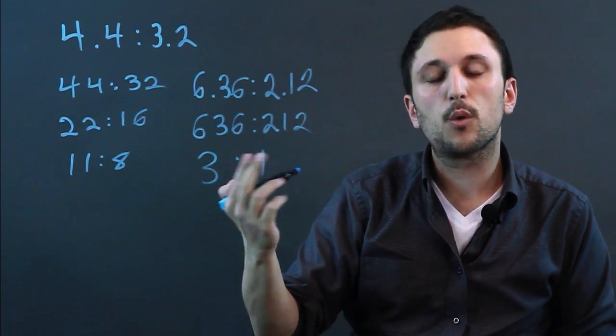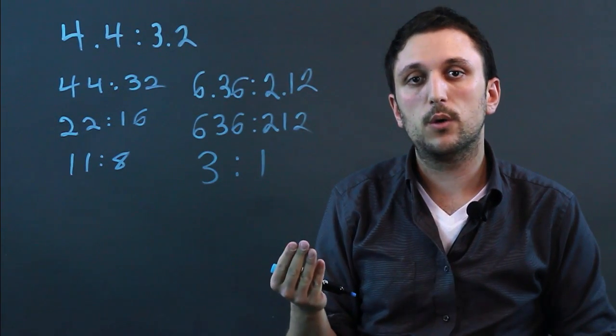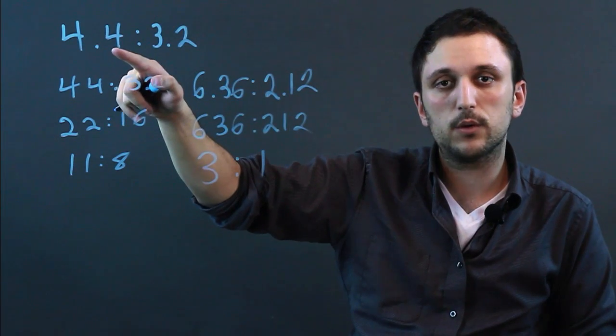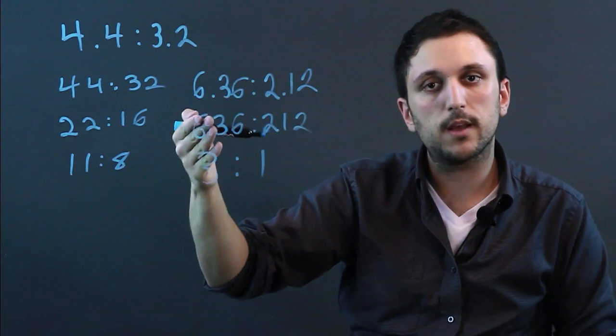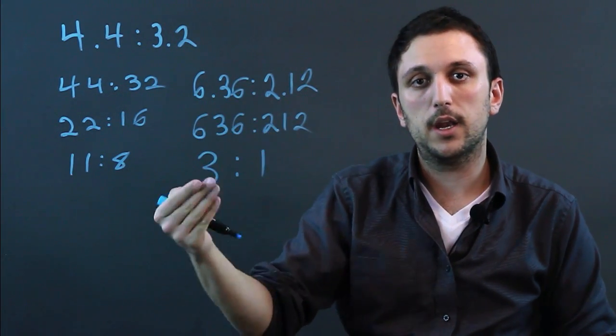So what you need to remember when you simplify a ratio with decimals is however many places you're going out, you can multiply by 10 or 100, and if we had 3 decimals, it would be 1,000, and on and on.